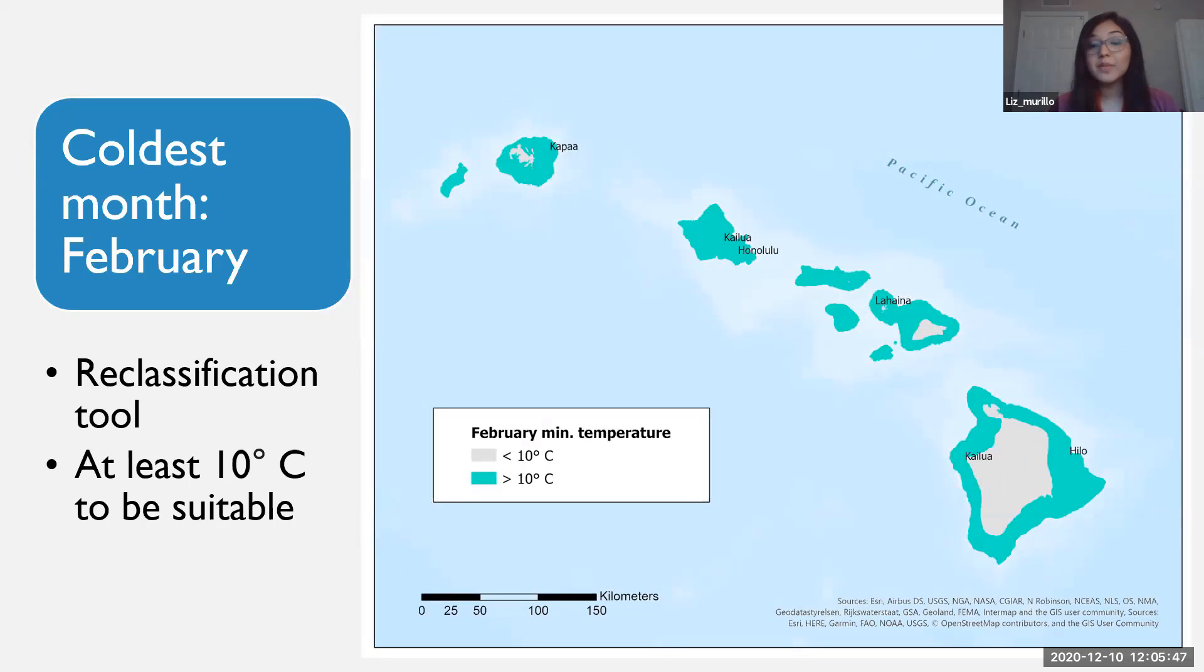And then this is my February data, which is the coldest month. The areas in green are areas that would barely meet the warmer condition aspect of the environment for a mosquito. All the areas in gray, mosquitoes would not survive in because they're not warm enough. The threshold for that was 10 degrees Celsius and above.